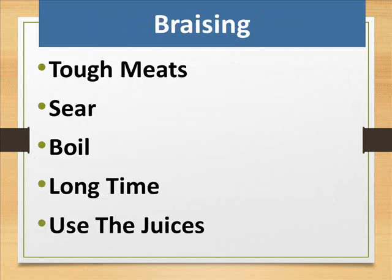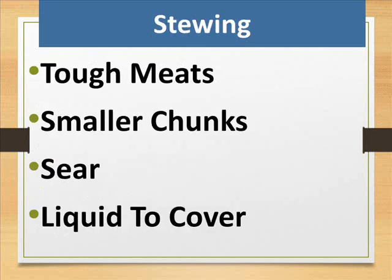Braising is used for tough meats — sear, then boil for a long time and use the resulting juices. Stewing also uses tough meats but in smaller chunks — sear them and add liquid to cover.